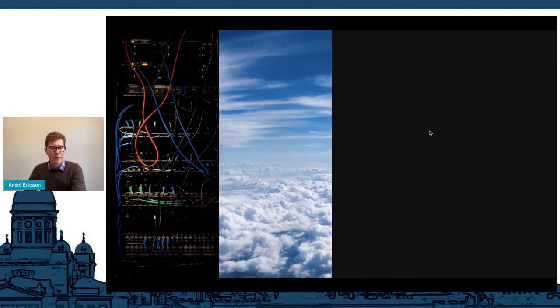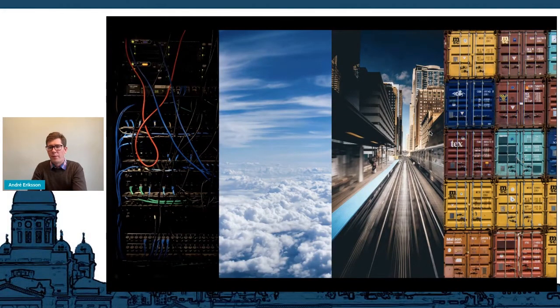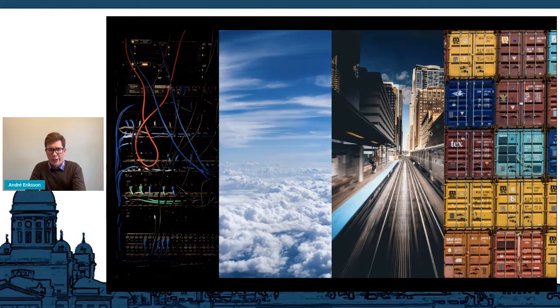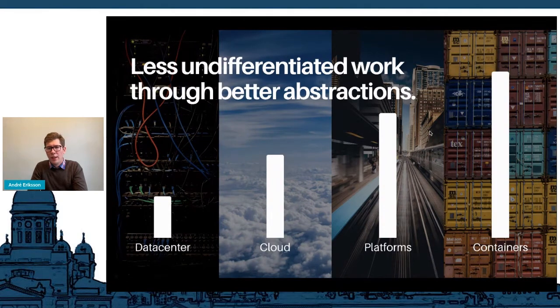Next we have platforms. Platform as a service is a higher level abstraction than the cloud. Initially these were distinct products from the cloud itself, but nowadays the cloud providers offer many different services of varying levels of abstraction. Finally, the most recent introduction was containers. Containers is a way to package essentially any application in a unified way, and this enabled us to create even higher level abstractions like Kubernetes. This has been an evolution that has gradually increased the abstraction level and made it easier to run software in production. This has improved developer productivity a lot, but it's all in the category of how we can do less undifferentiated work.